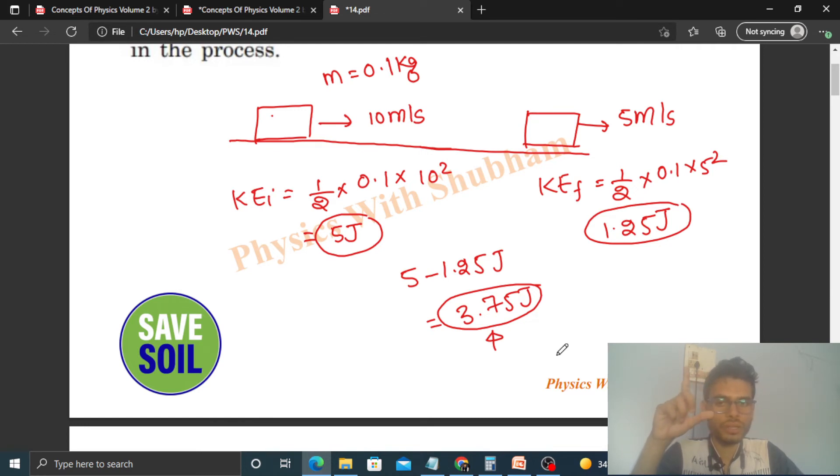Here the kinetic energy is converting to thermal energy. Whatever decrease there is in kinetic energy has converted to thermal energy, because here potential energy will not change. This block is moving on a horizontal surface, so that's why the potential energy will remain constant.